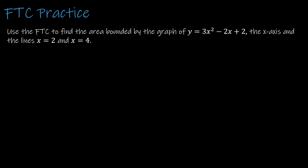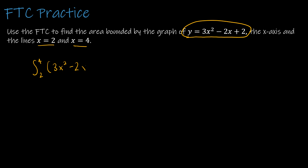Here's one last question, written a little differently — I want to make sure you know how to write the integral yourself. Press pause and try the question, then press play to see how you did. We have the function with limits of integration 2 and 4, so we take the integral from 2 to 4 of 3x squared minus 2x plus 2 dx.